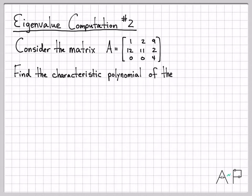First, we're going to find what is called the characteristic polynomial of the matrix. And then once we've found the characteristic polynomial by setting it equal to zero and finding the roots, we can find the eigenvalues.